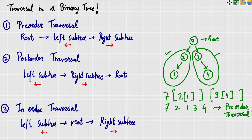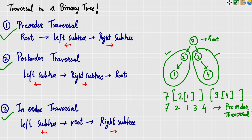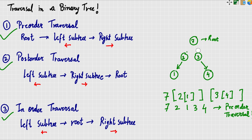We have seen pre-order in detail. For post-order and in-order, we are going to see them in detail with code. Now I want you to make post-order and in-order traversals for this same tree with nodes 7, 2, 3, 1, 4, and leave your answer in the comments below.